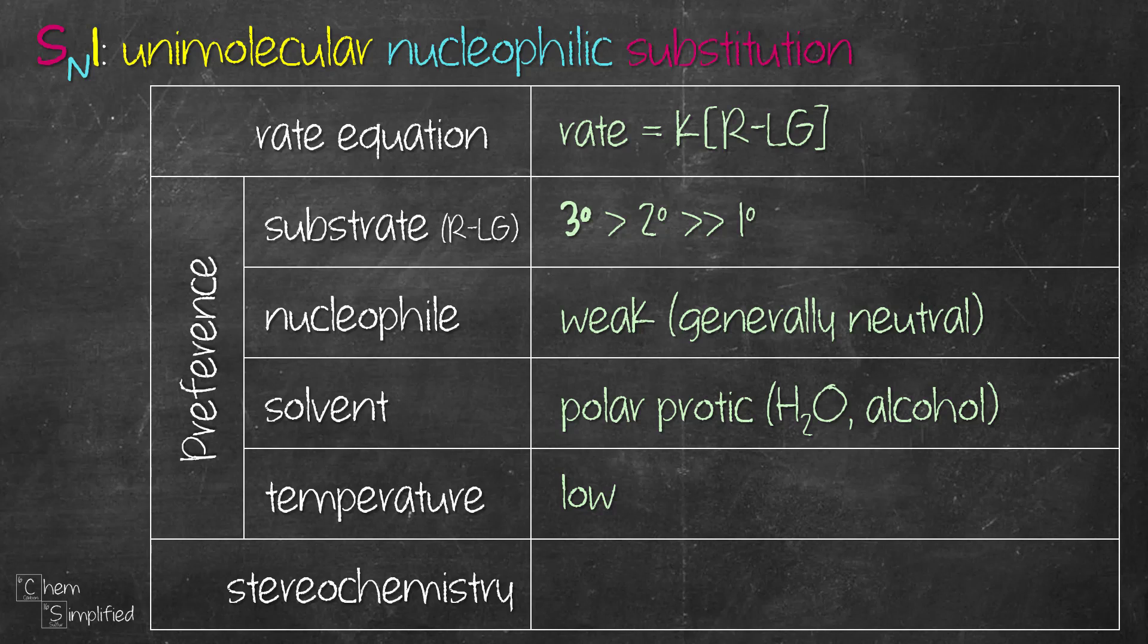Finally, the products formed in an SN1 reaction are going to be racemate, which contains equal portions of the enantiomers. We'll look at the mechanism to further explain this point.